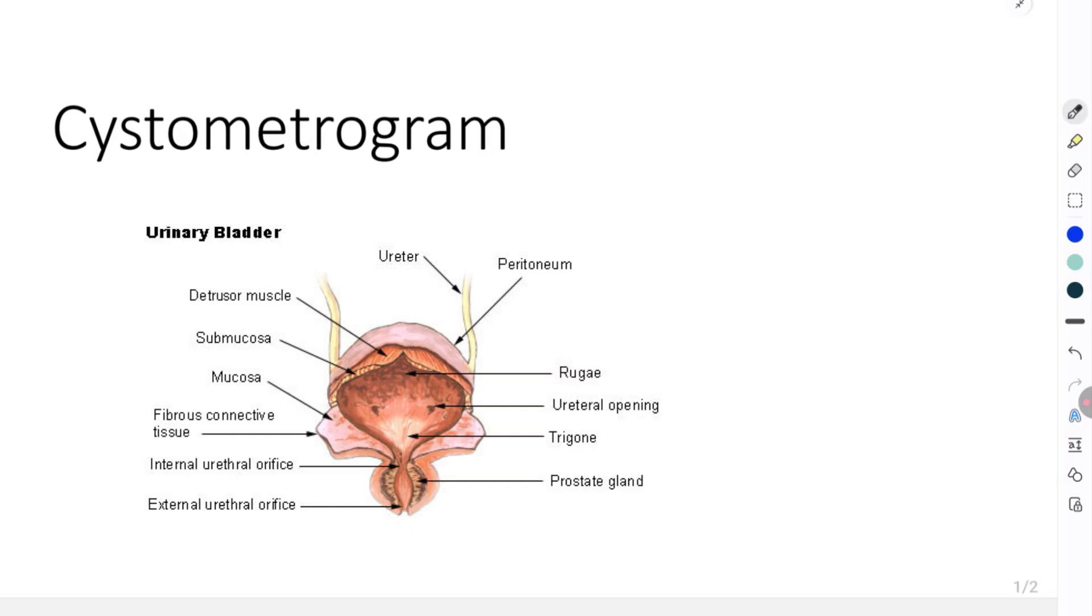Now in the bladder there is a muscle called the detrusor muscle. It is a smooth muscle and this muscle has the property of plasticity whenever the muscle is stretched. Plasticity means adaptability. We can understand this property of the bladder muscle, the detrusor, with the help of the cystometrogram.